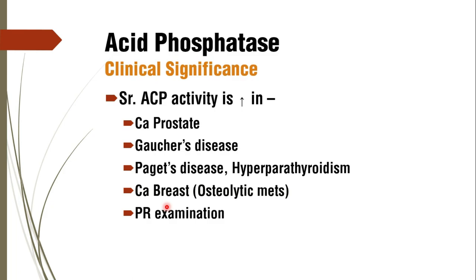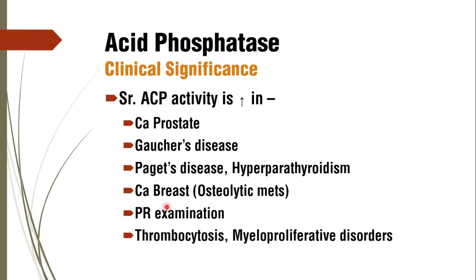A simple per rectal examination, done clinically to assess prostate size, involves manipulation of prostate tissue, which will show an increase in acid phosphatase activity. Thrombocytosis and myeloproliferative disorders also show increased total acid phosphatase activity, because RBCs have one isoenzyme of acid phosphatase.